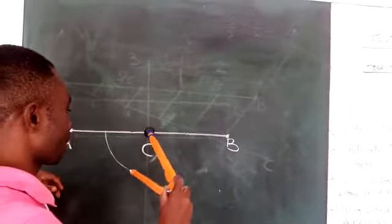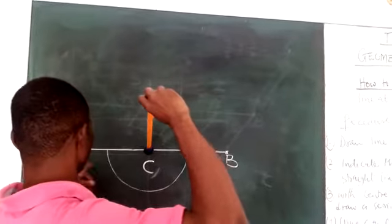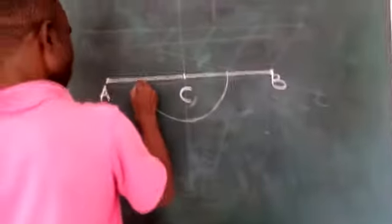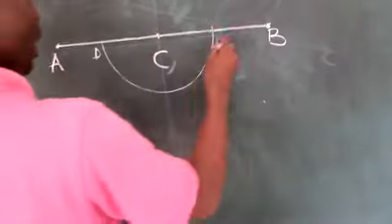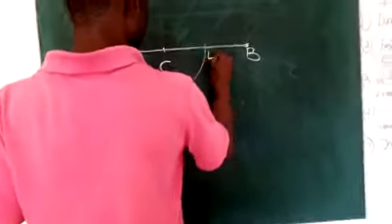Not an arc, a semi-circle. I will draw my semi-circle to cut line AB. That semi-circle will cut line AB at points D and E.